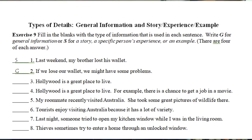For Exercise Nine, I read the directions and give them two minutes to complete it, then have them check with a classmate. Exercise Nine is 'Types of Details': general information and story/experience/example. Students read sentences and identify what type of support each one is. For example: 'Last week my brother lost his wallet' — that's a story. 'If we lose our wallet, we might have some problems' — that's general information. 'Hollywood is a great place to live. For example, there's a chance to get a job in a movie' — that's an example or experience.